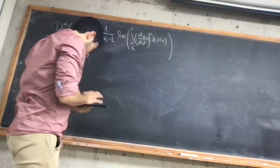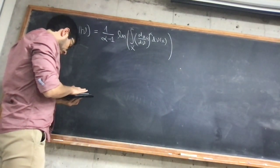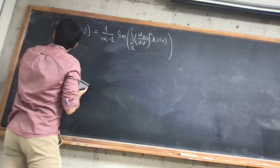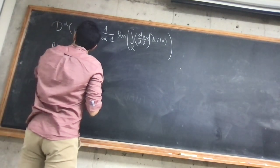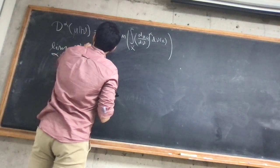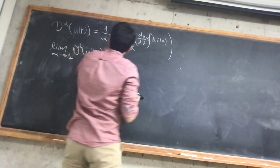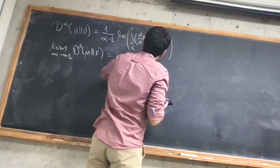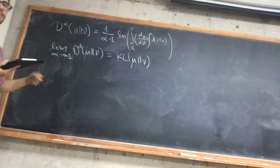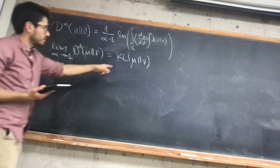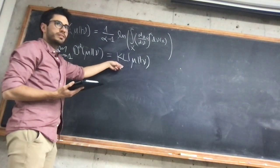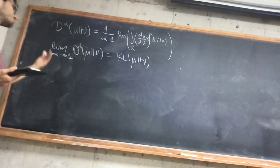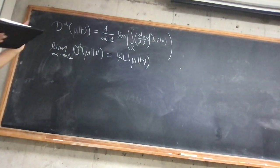That's the definition. The point is that at the limit where alpha tends to 1, this alpha range divergence becomes the KL divergence. In particular, the arguments I was making last time about mixing times were based on properties stated for the KL divergence, but they can readily be generalized for range divergences.